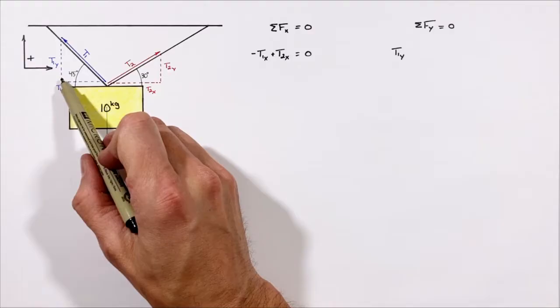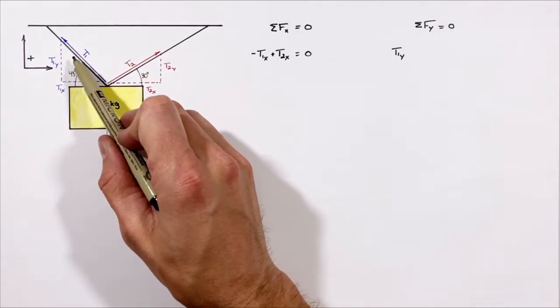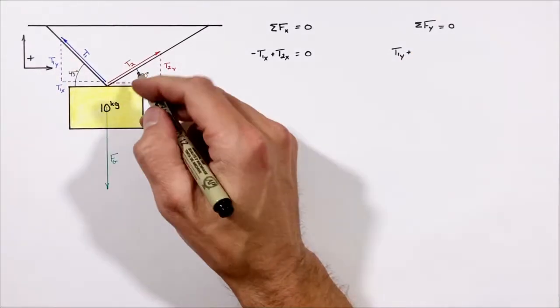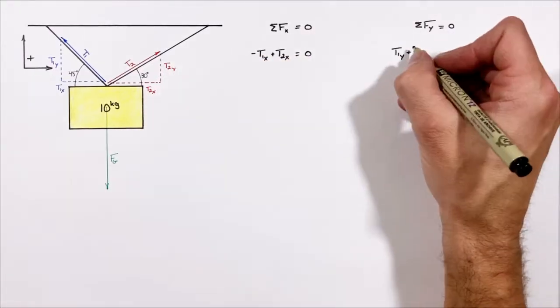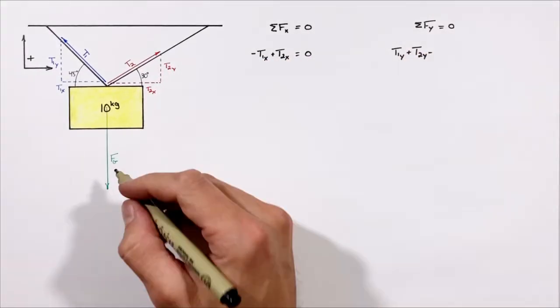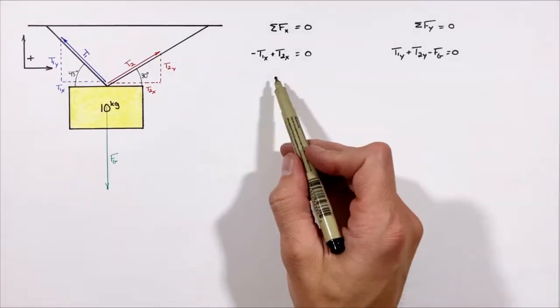Starting with t1, we're going to have t1y, which this time is positive because t1 has a vertical component which is upward. Then we're going to have t2y, which is also upward so it's positive. And last, we have the force by gravity downward.